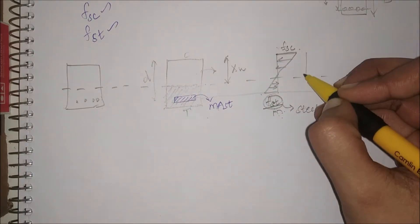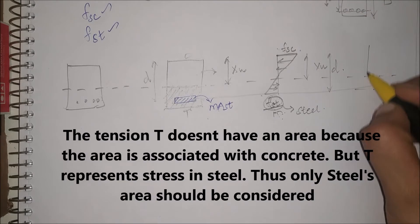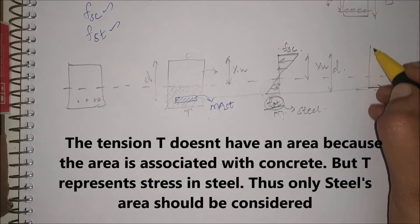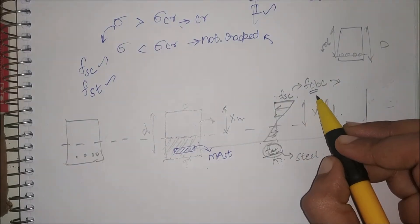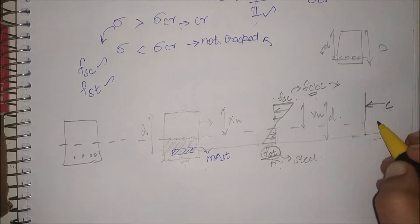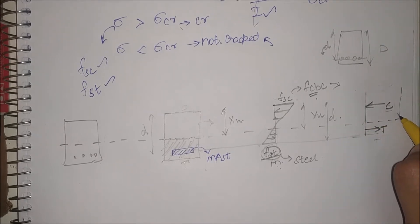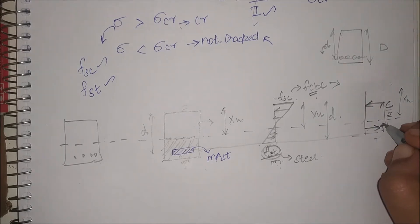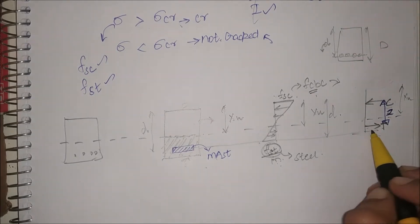This is XU and this is d, so I'm going to convert this into a simpler form. My tension is acting in this direction and my compression is acting in this direction. FSC can also be called FCBC. Drawing it in simplified form: C is acting somewhere here and T is acting somewhere here. The whole thing is XU, and the difference between C and T is called Z — that is our lever arm.